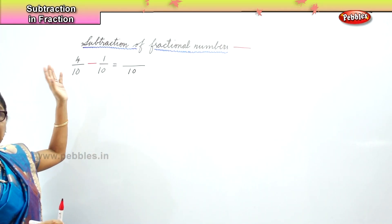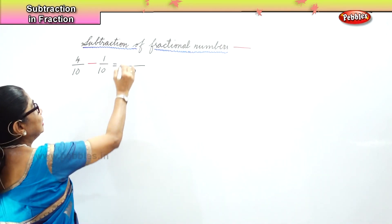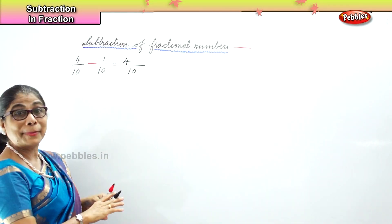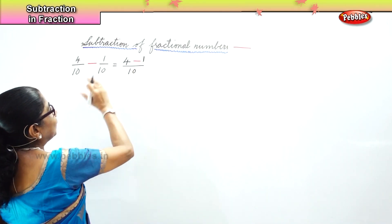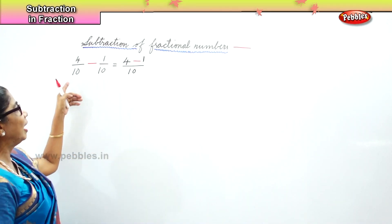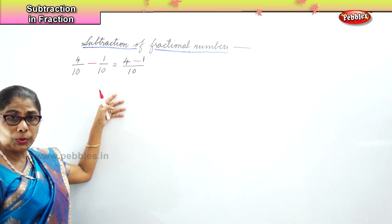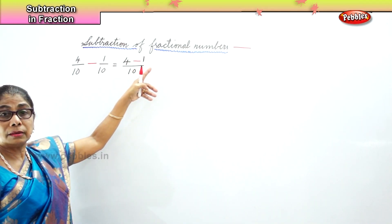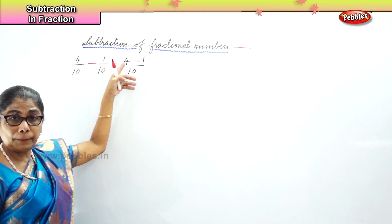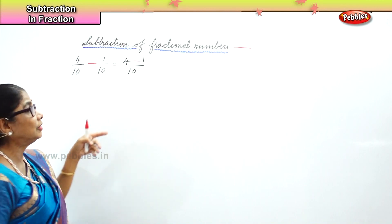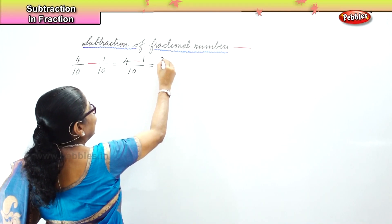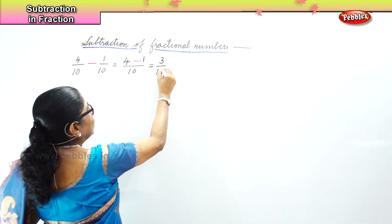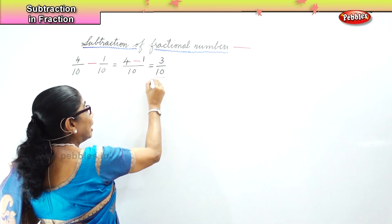And from the bigger numerator minus the small numerator. That is, you have 4 minus 1. So in subtraction of fractional numbers, if the denominators are the same, you simply minus the small number from the big number. So 4 minus 1 is 3. We get 4 take away 1, that is 3, and we put the denominator 10 — and this is our answer.